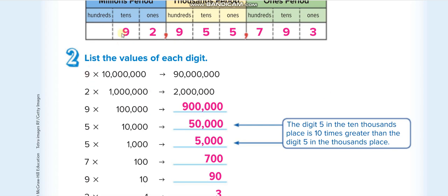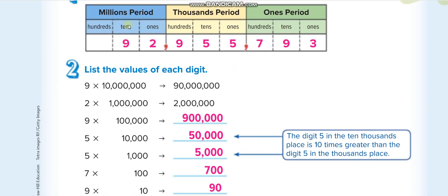Now let's look at expanded form. For the number 92,955,793 — the first digit, 9, is in the ten millions place, so 9 times 10,000,000 equals 90,000,000. The next digit, 2, is in the one millions place, so 2 times 1,000,000 equals 2,000,000.